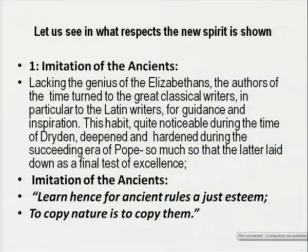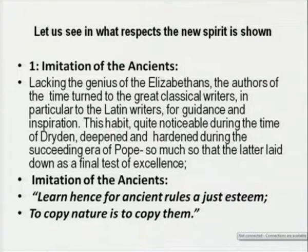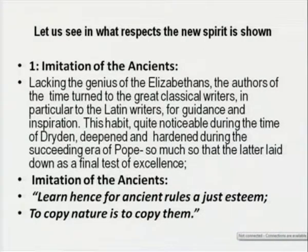Therefore we find this completely new concentration on something which is different from the other ages. First, we will see the imitation of the ancients, because it was called the Augustan age. Lacking the genius of the Elizabethans, the authors of the period turned to the greatest classical writers — beginning with the Latin writers — for guidance and inspiration. And as we have seen, during the time of Dryden this deepened and hardened during the succeeding era of Pope, so much so that the latter laid down as a final test of excellence. Pope had said that imitation of the ancients leads hence to following ancient rules — a just esteem, to copy nature is to copy them.